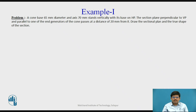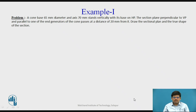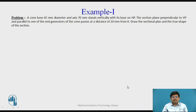Then we have a section plane which cuts the cone. The section plane is perpendicular to the vertical plane and is parallel to one of its end generators. As we know, there are no specific edges for a cone because it is a solid of revolution — hence no edges, we have generators. So, it is parallel to one of the end generators, and it is 20 mm away from that end generator.